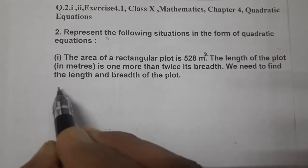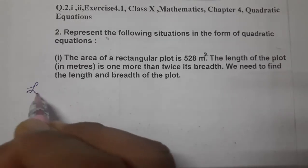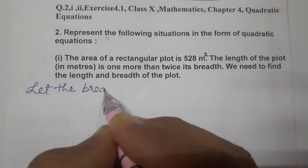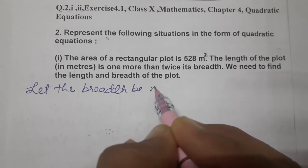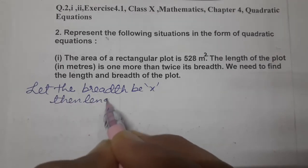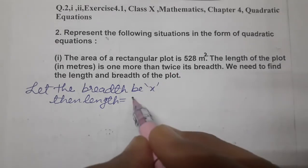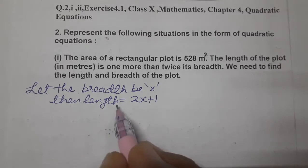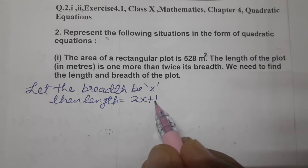So let's find out. Assume it. We will start with the smaller one — the breadth is smaller. Let the breadth be x. Then, what is given about the length? One more than twice the breadth. So breadth ka twice is 2x, plus one more. So length becomes 2x plus 1.